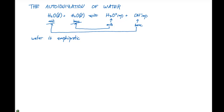meaning that it can act both as an acid and as a base. We can come up with an equilibrium expression for this reaction. If we wanted to come up with K, we can say that K is going to equal the concentrations of the products — H3O+ times OH− — divided by the concentration of the reactants. But our reactants are all pure liquids, so we divide by one.